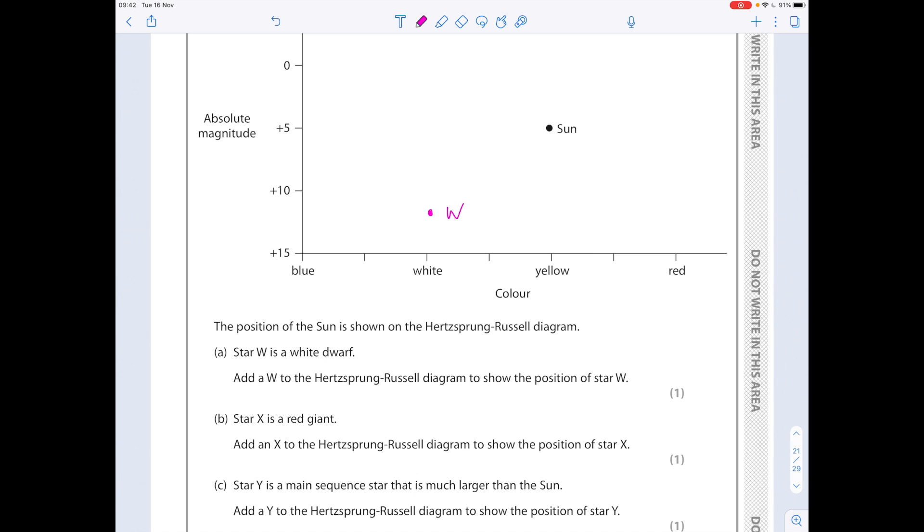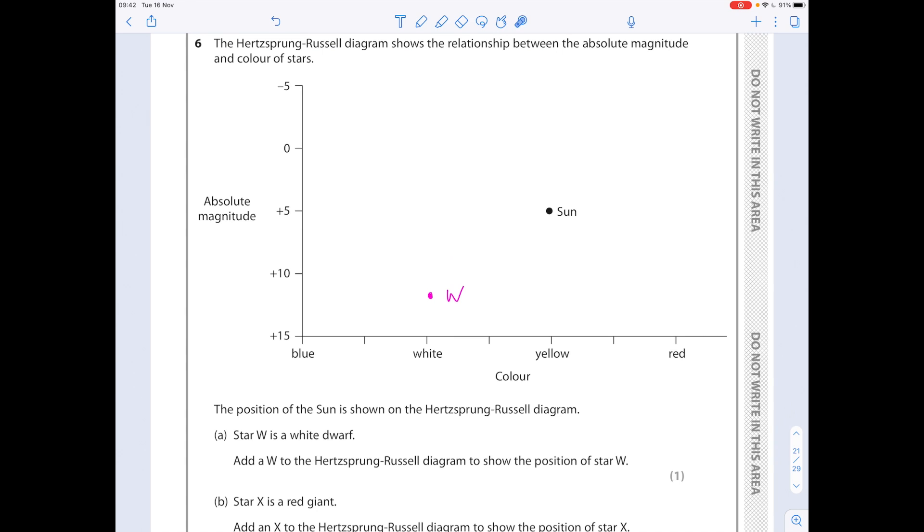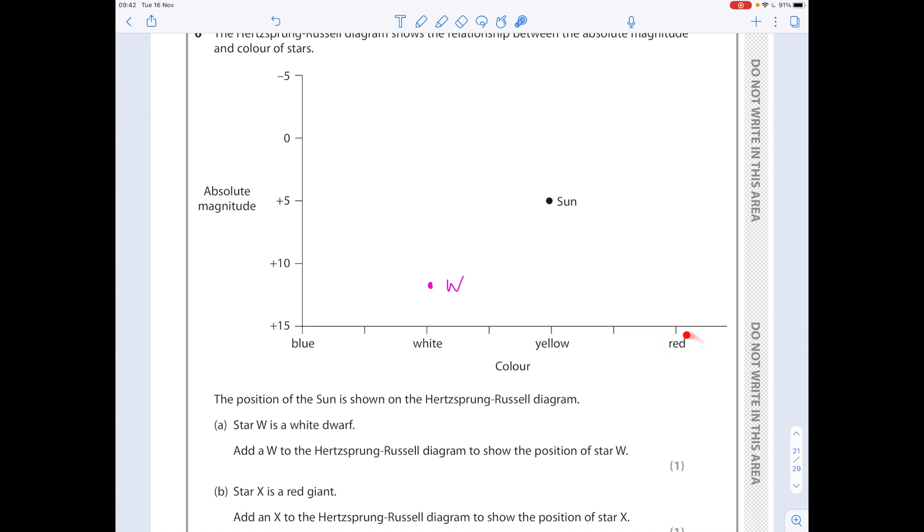Star X is a red giant. Add an X to the Hertzsprung-Russell diagram to show the position of star X. So again, the red giants were around here, which is useful because, look, there's red. We know that they're going to be quite bright, so it needs to be up here. We're going to label it X.